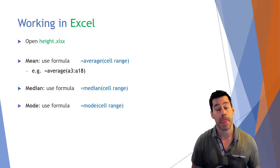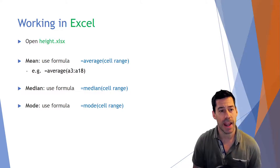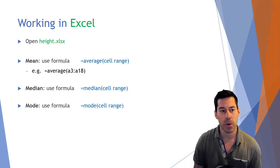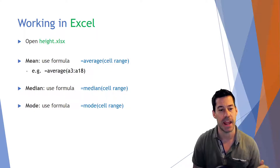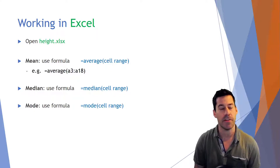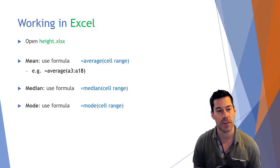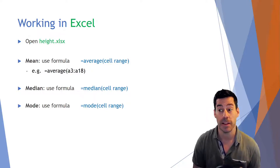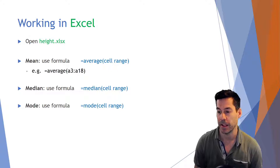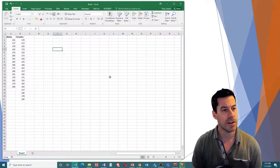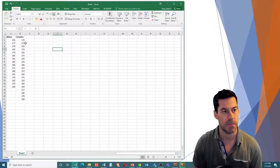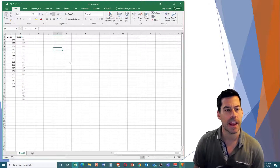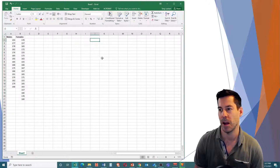So in Excel, let's open height.xlsx, and we're going to start off by calculating the mean, median, and mode. I've given you three calculations to be able to calculate those very easily. So let me open up that file here. Now here you can see Excel, and I've got our list of male data and female data — it's been put in column A and column B. Let's just start a list of parameters. I'm going to put them over here in maybe column J.